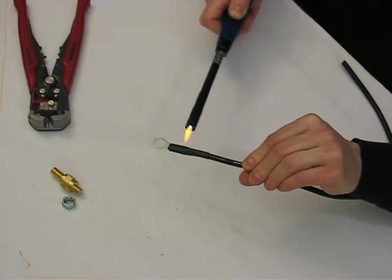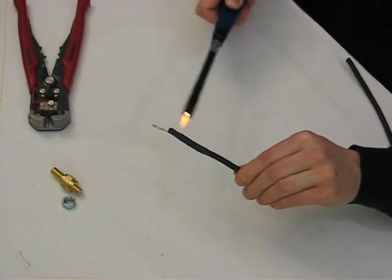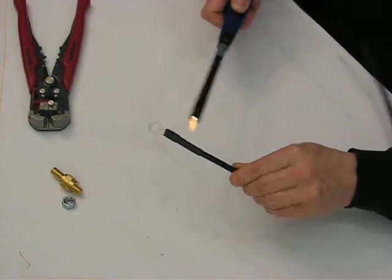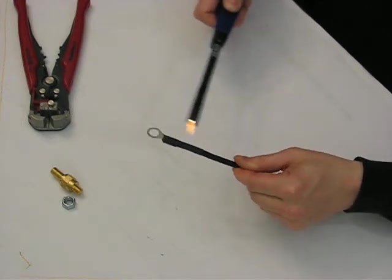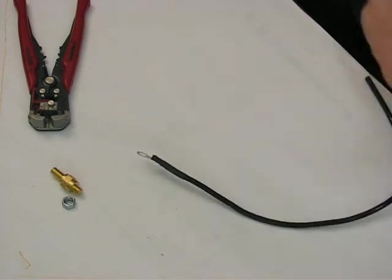Now when I apply this flame on heat shrink, I'm essentially always moving it around. I'm watching the heat shrink, watching it shrink down, just looking for any wrinkles, and there you go. It's about as good as it gets.